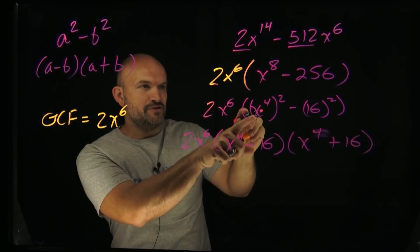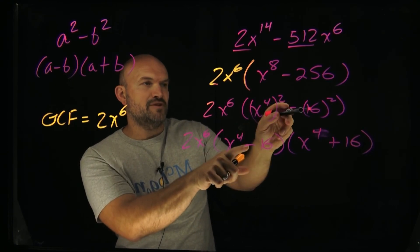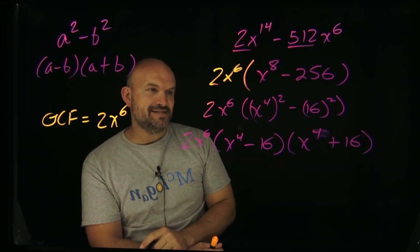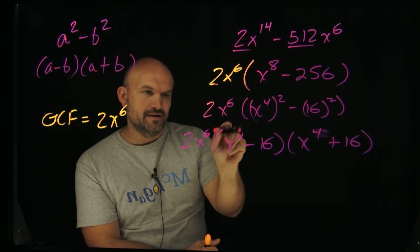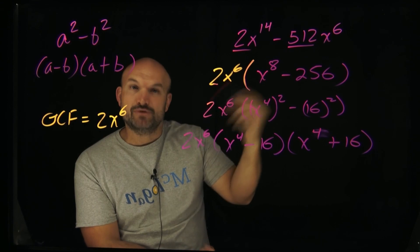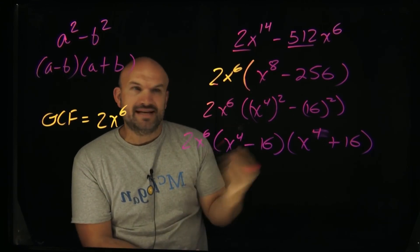So all I'm doing is I'm taking my first term and subtracting from that term, and then I'm going to add it to that term. And now recognize that I have something with another square term. I have x to the 4th. I can rewrite that as x squared squared. And 16 is a square number. That's going to be 4 squared.